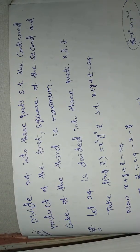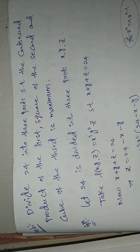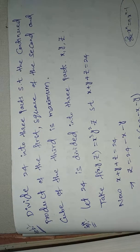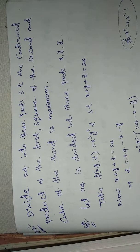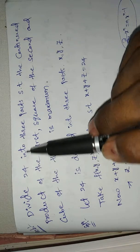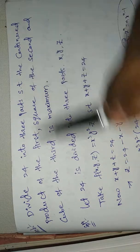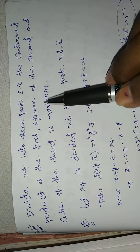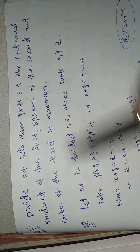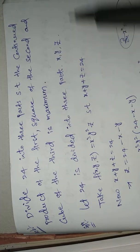Welcome to Rajesh Dekkaloo. Today our topic is maximum and minimum values problem. The problem is: divide 24 into three parts such that the continued product of the first, the square of the second, and the cube of the third is maximum.